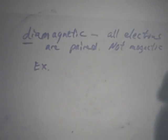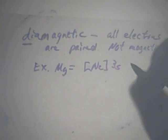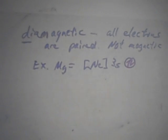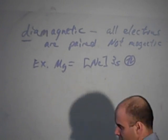For example, magnesium. Magnesium is neon 3S2. So magnesium would not be magnetic. It's not going to be attracted by a magnet.